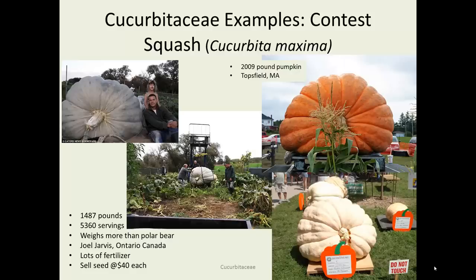There are some really big squashes. On the left is a squash where the grower got a record for the heaviest squash ever produced. His weighed about 1,500 pounds, which somebody calculated would be 5,400 servings of squash — it weighed more than a polar bear. His secret was lots of fertilizer. He was to get an award for winning the competition, and in addition he can sell the seeds probably for $40 each. There is quite a competition in the large squash category around the world.